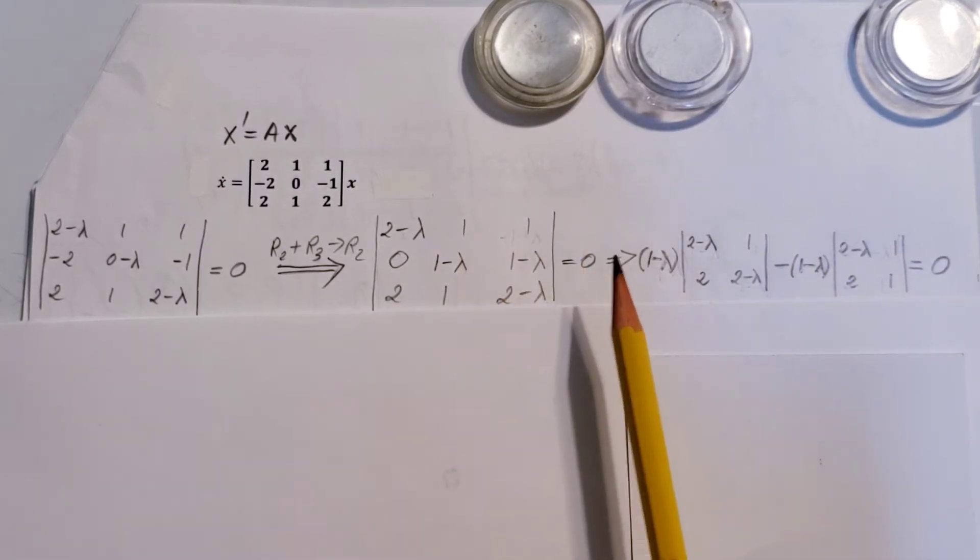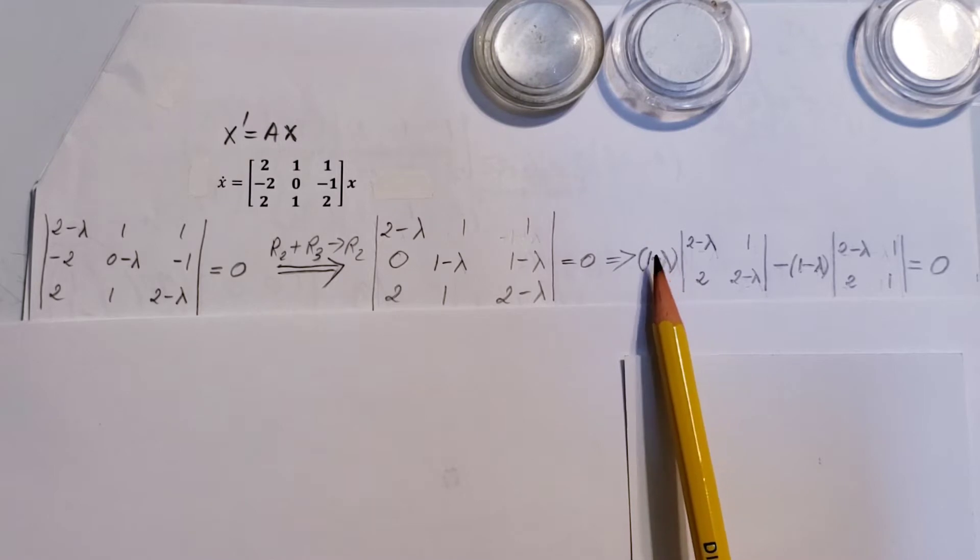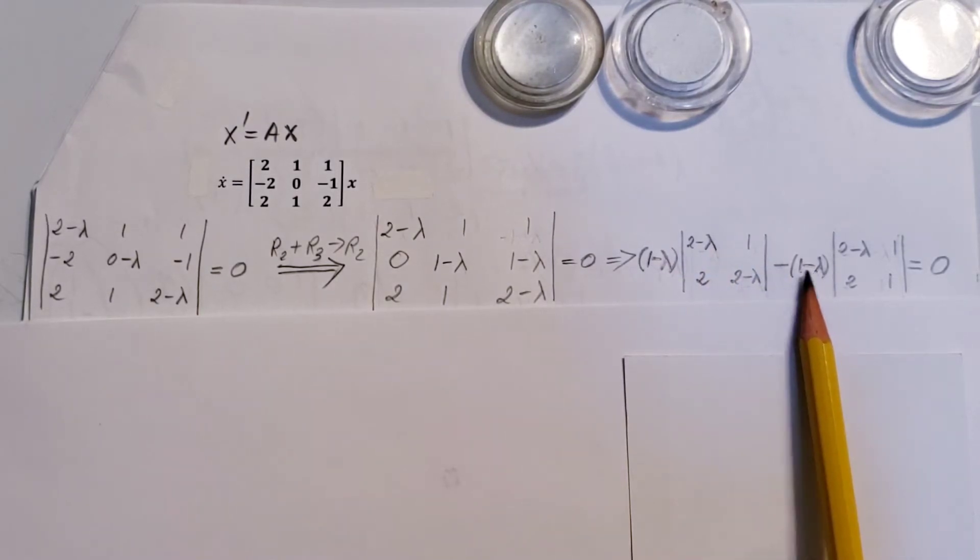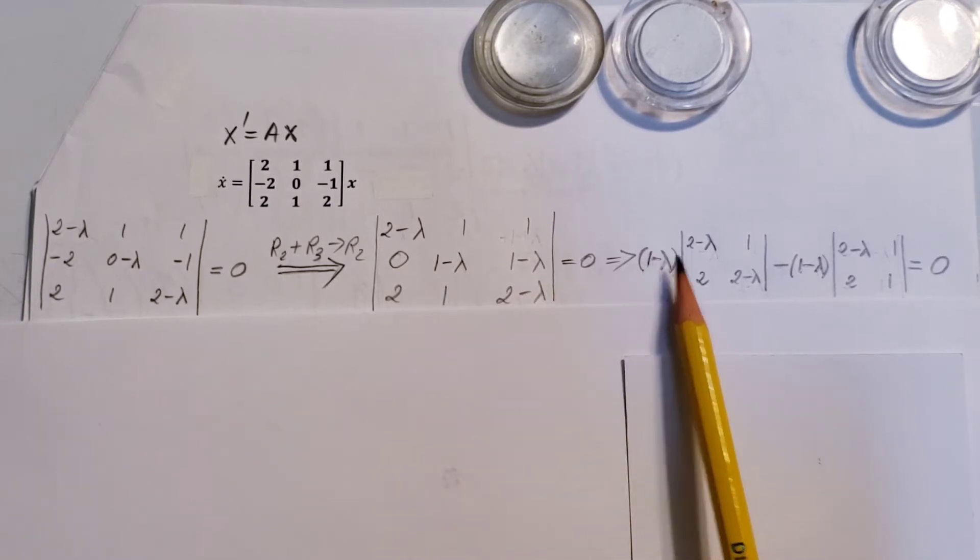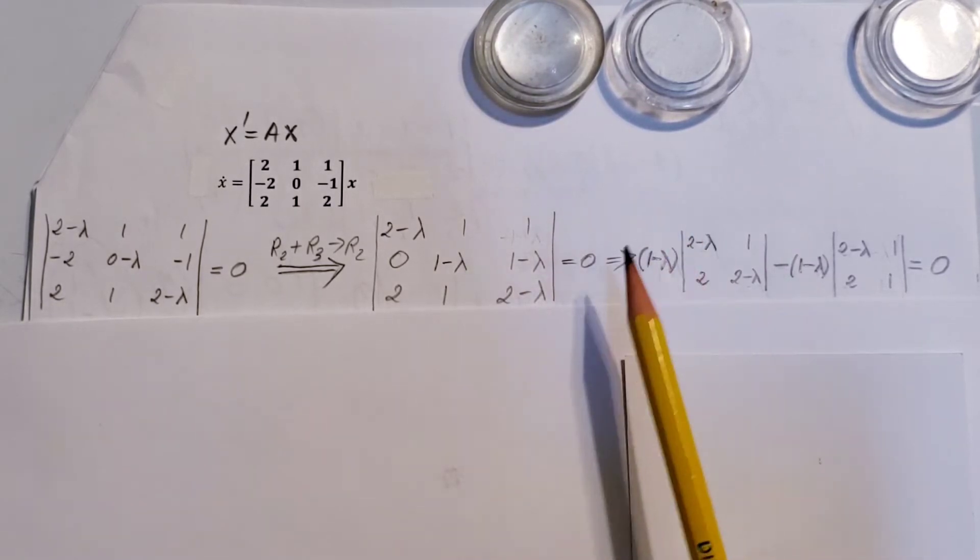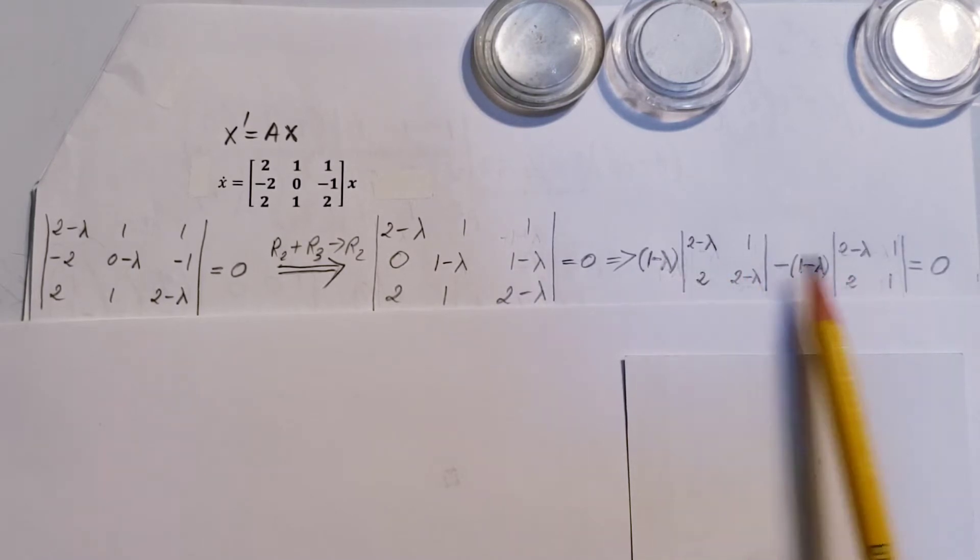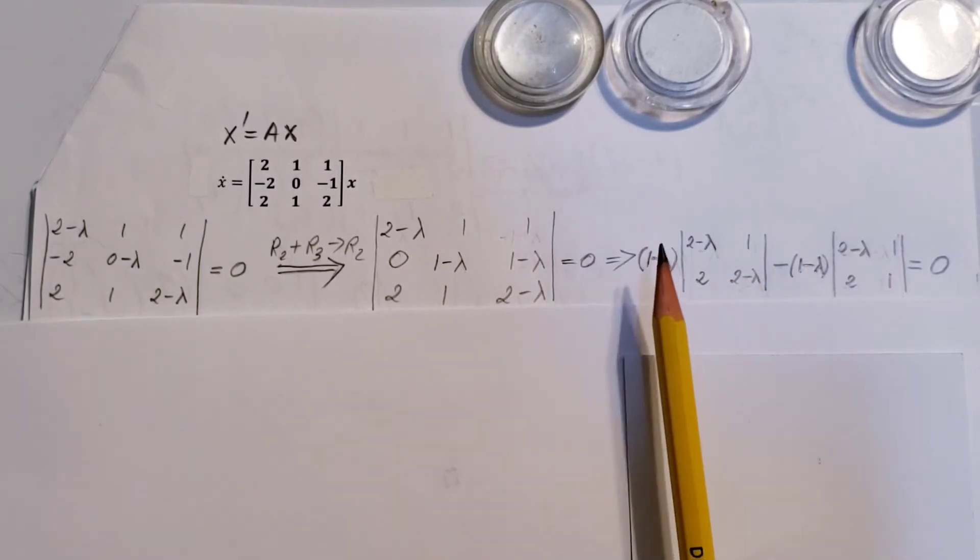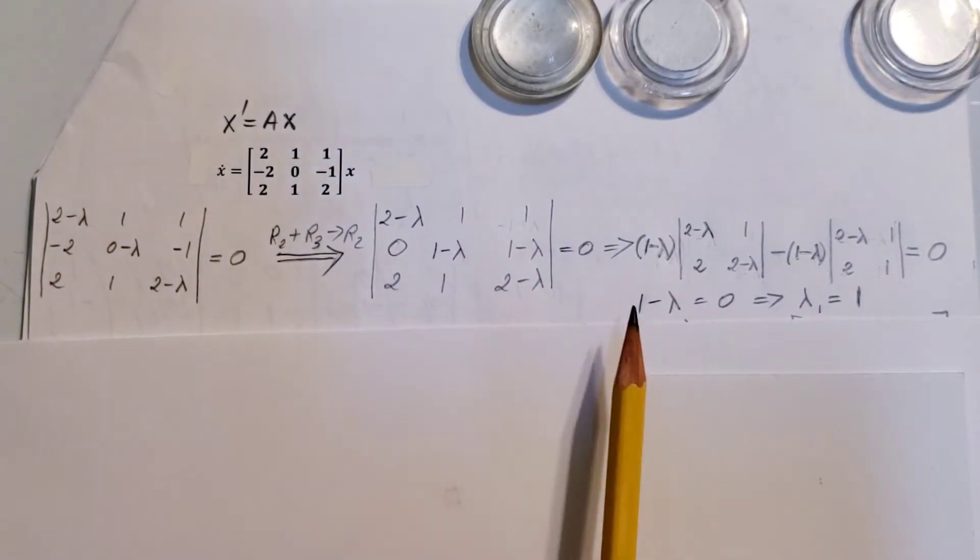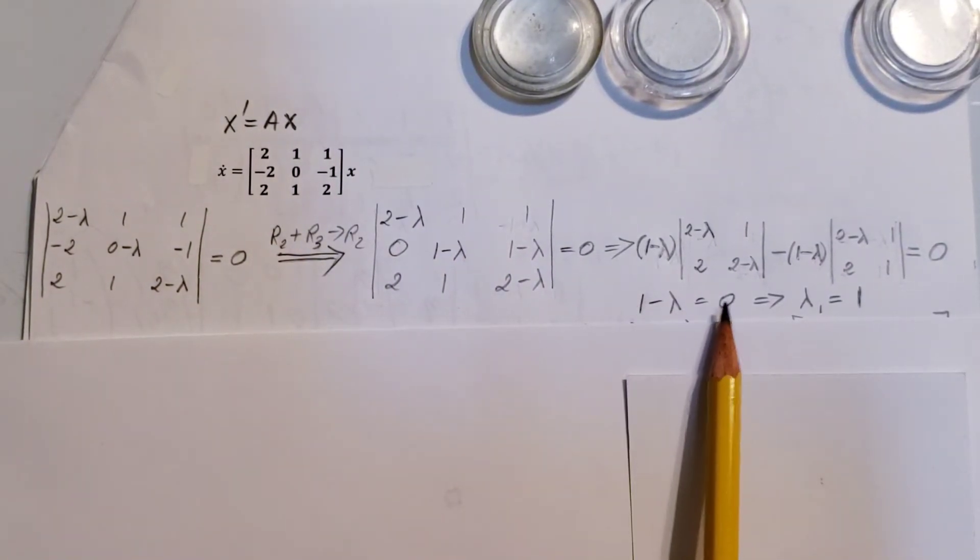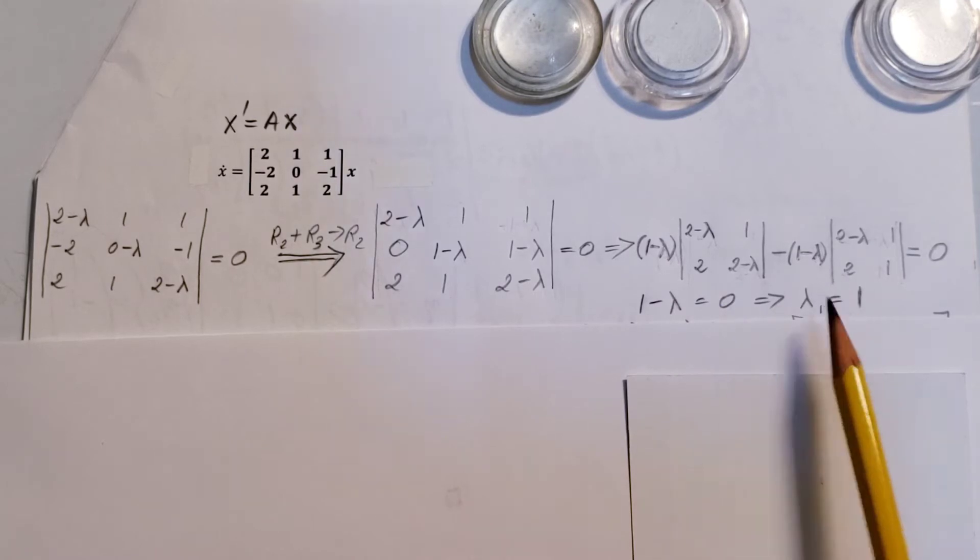And I also have to pay attention that I wanted to have a term in the front where I could simply factor them out and allow me to have a simpler result here. Because we can take this and this, factor it out, and find our first eigenvalue. 1 minus lambda equals 0, lambda 1 is 1.